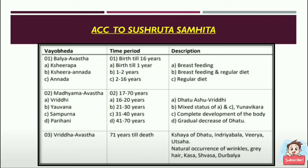From 21 to 30 years it is called Yuvana, which is a mixed status involving Yuvana Vikara. From 31 to 40 years it is called Sampurna, where complete development of the body takes place. From 41 to 70 years it is called Parihani, where gradual decrease of Dhatu begins.